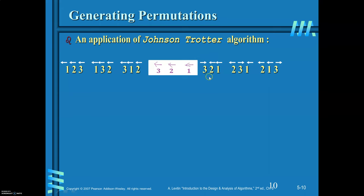With 3's direction reversed, 3 is now mobile pointing to 2 — exchange these two. Then 3 is again mobile; swap 3 and 1 to get {2,1,3}. Now 2 is not pointing to any element, 3 is not pointing to any element, and 1 is pointing to 2 which is larger than 1, so 1 is not mobile. No mobile integer exists, so the loop ends. The Johnson-Trotter algorithm has generated all six permutations.